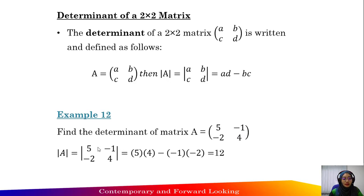It will be the product of these two elements. That is 5 times 4 minus the product of these two elements, negative 1 times negative 2. So you will get 12.